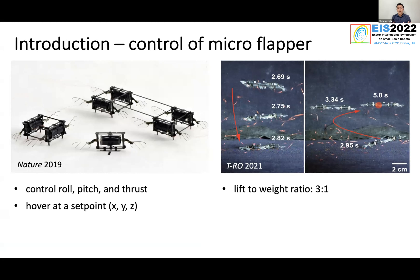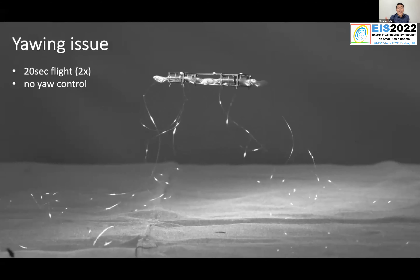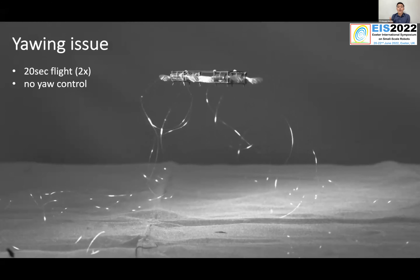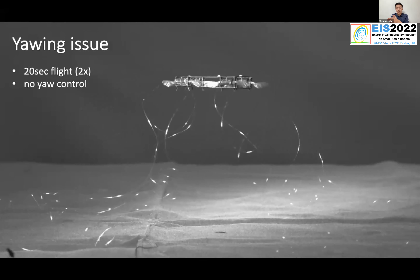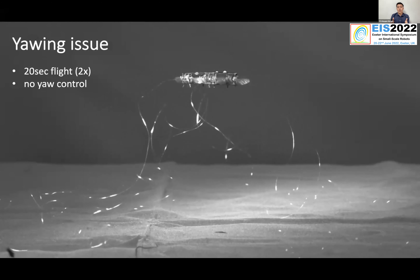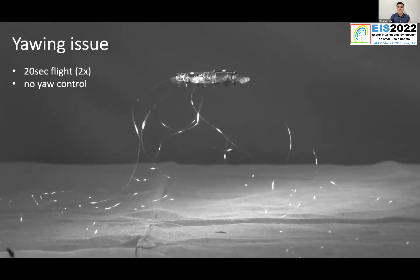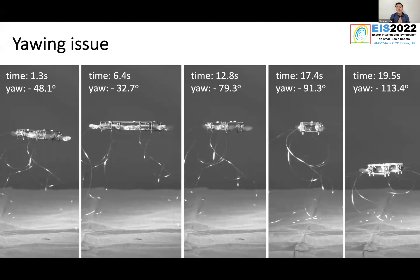This is great, but in the flying robot community you'll see there is one control authority that is missing — and that is yaw control. This is what happens if you don't have yaw control. What you're looking at is a 20-second flight played at twice the speed with no yaw control. You can see the heading angle, or yaw angle, of the robot is actually changing throughout the entire flight. Here is a series of screenshots: from the very beginning, the robot starts to turn around 50 degrees, then oscillates a lot, and when it's about to land it has turned more than 90 degrees, which is really bad.